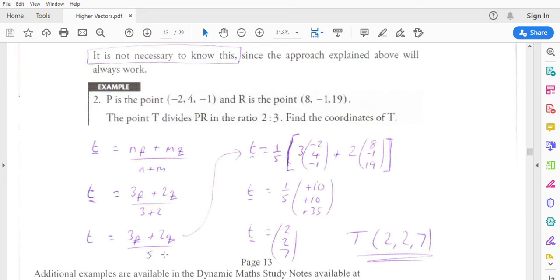I'll just take the 5 out. So it'll be a fifth of 3P plus 2R. Multiply through, add them together. Do a fifth of 10, 10, 35. And once again, we end up with 2, 2, 7.